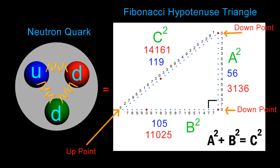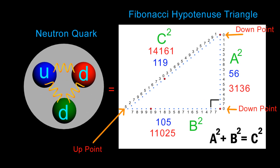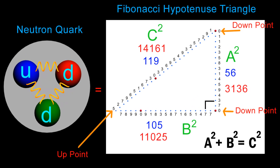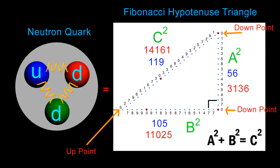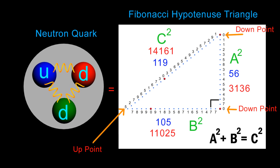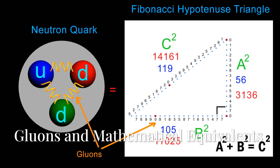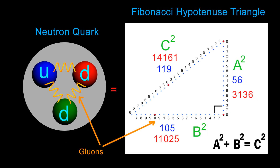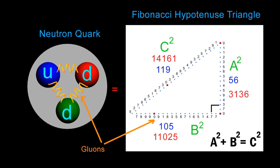It is being held together by three strands of mathematical information which I link directly to the gluons or force carriers. In the scientific model, a neutron has two down quarks and one up quark. If you look at our Fibonacci 60-digit Pythagorean triangle, you will notice that it has two nodes or endpoints that terminate in a zero and one point that terminates in a five. These endpoints are my mathematical equivalent to the two down and one up quark. The numbers running between the nodes are the mathematical equivalent to the gluons or force carriers that hold the quarks in place.